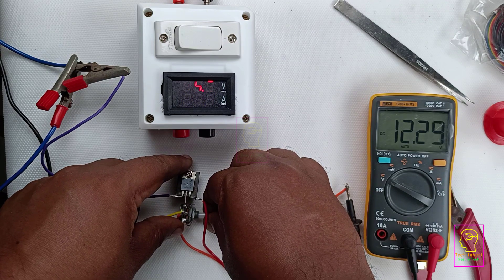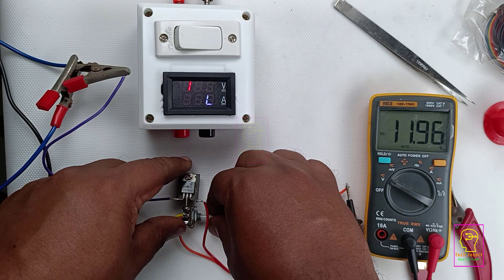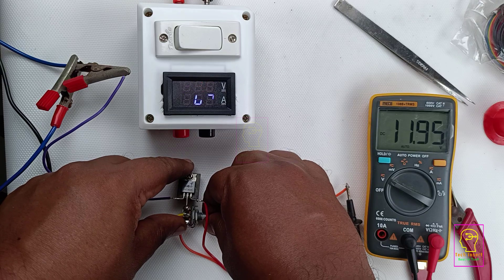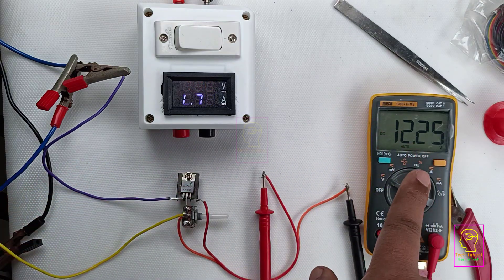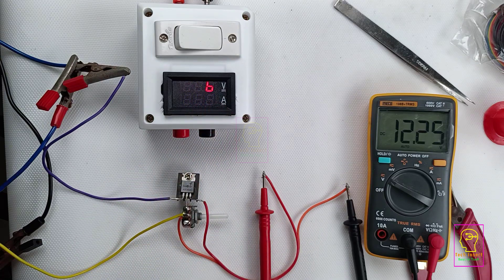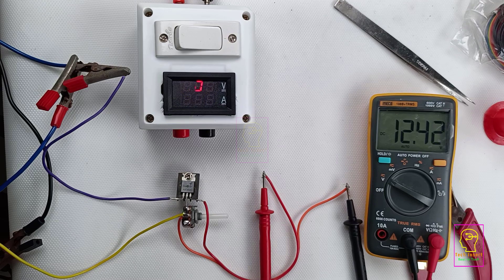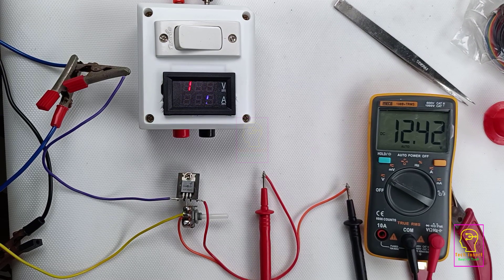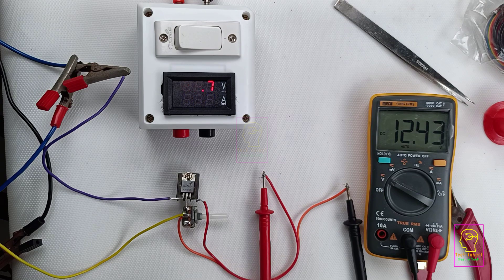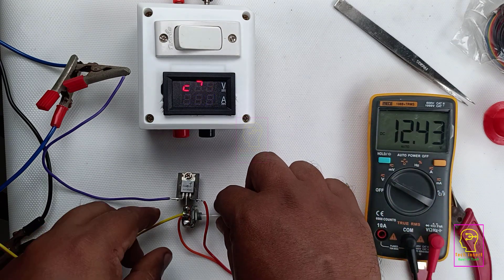If we are using a 2.2k preset or a 5k preset, it is very simple or smooth to vary the output voltage. But here with 10k, what is happening is a small change in the resistance is actually creating a large change in its output. Now I have fixed the voltage to 12 volt. I have changed the input voltage to 20 volt. Still you can see the output voltage is fixed to 12.4 voltage.